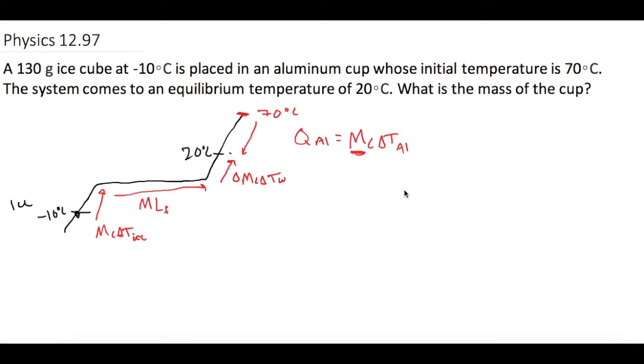So we know that all of this is going to equal zero. We're going to have the energy that we take to increase the ice up to zero, plus the energy to melt all the ice, plus all of the energy to take the water from 0°C all the way up to 20°C. Now we're also going to add mc∆T for the aluminum, and all that is going to equal zero, meaning the energy is conserved.